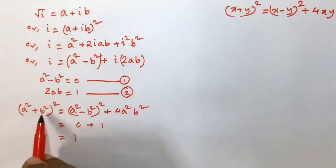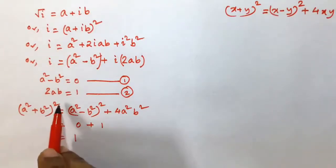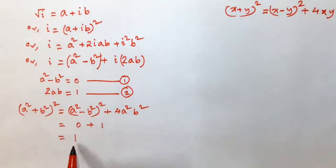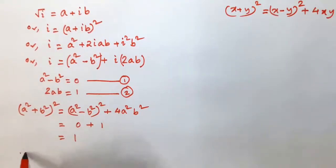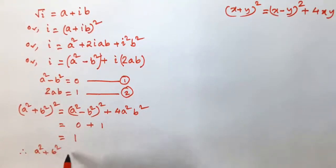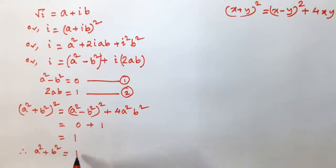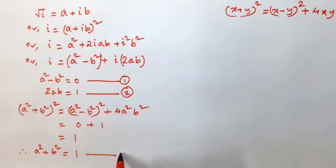So, (2ab) whole square means 1 squared, which is just 1. Therefore, (a squared plus b squared) whole square is equal to 1. Therefore, a squared plus b squared is equal to 1. The square of two numbers is always positive, so we can't put any negative sign here. Mark this as equation 3.